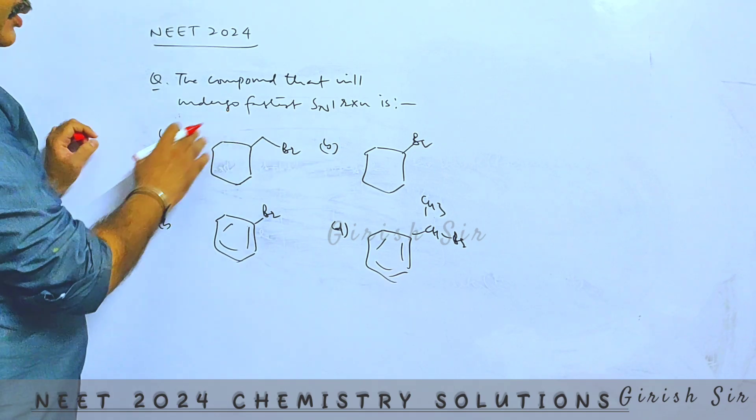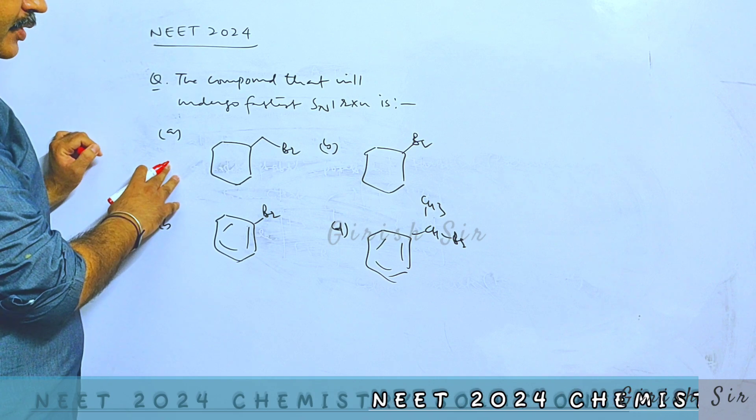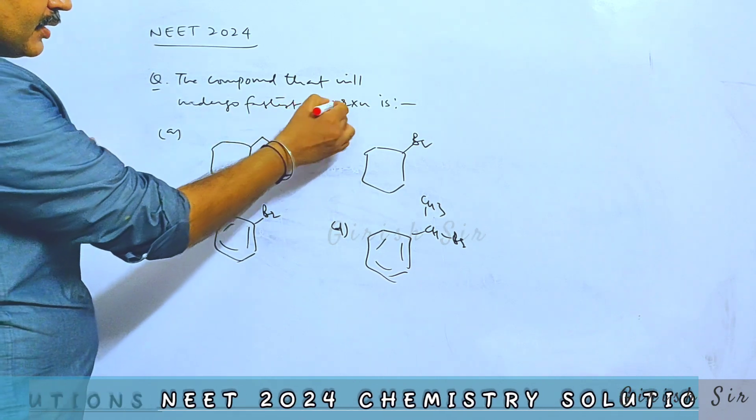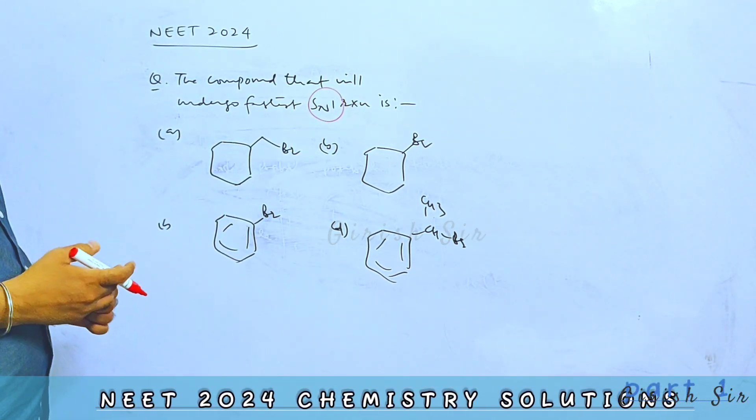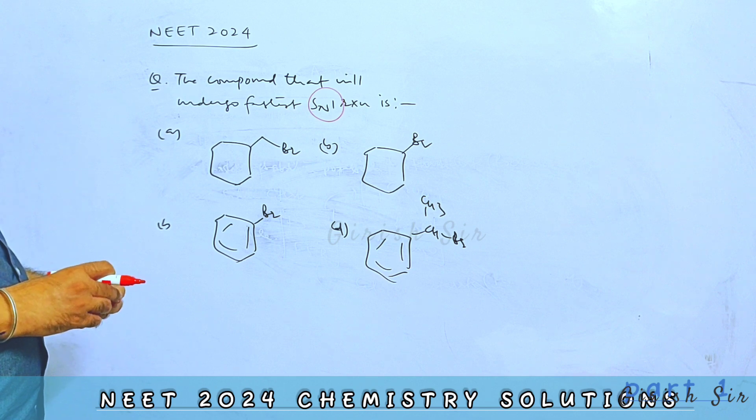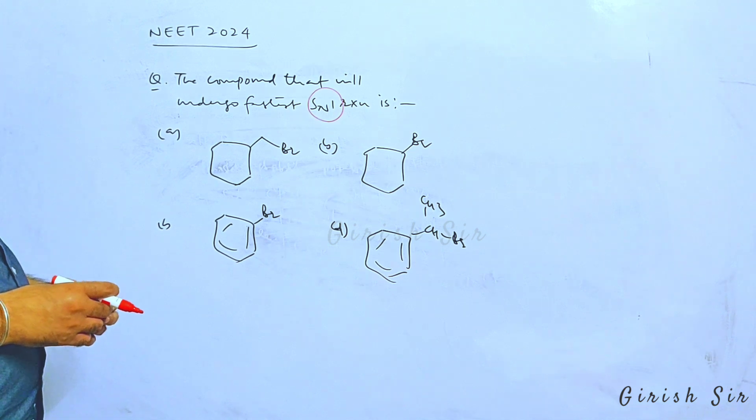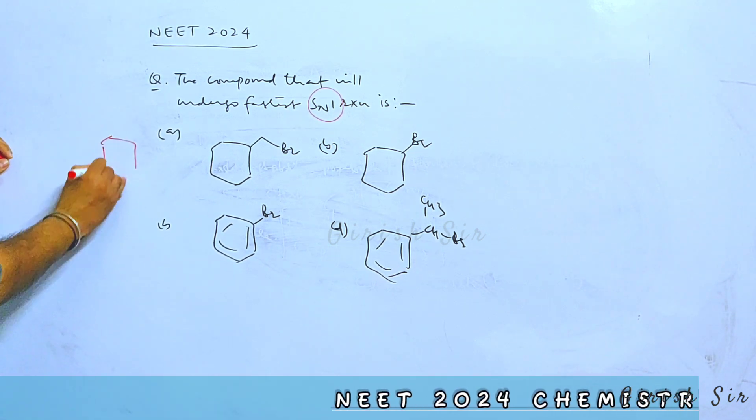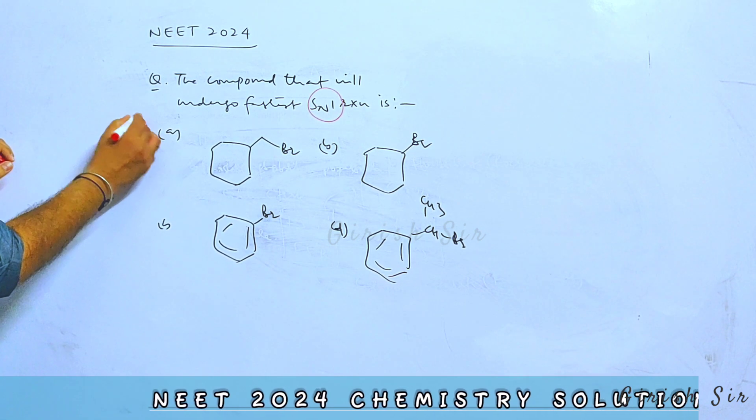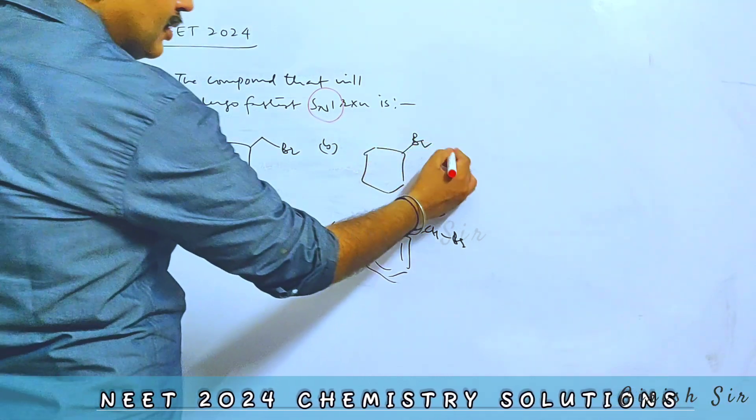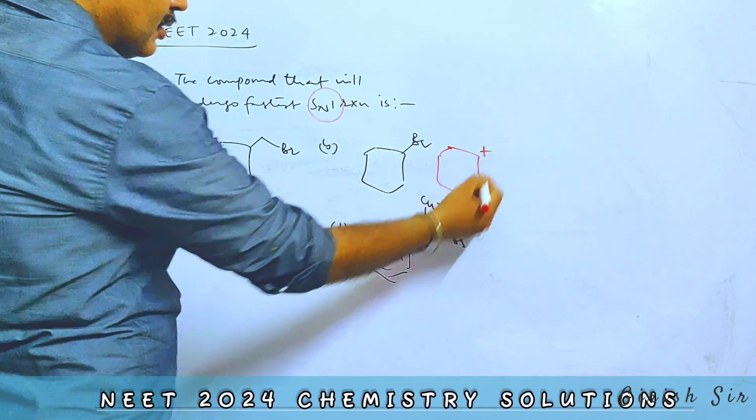Let's see the next question. The compound that will undergo fastest SN1 reaction. SN1 reaction proceeds by formation of carbocation intermediate, so rate of SN1 reaction is decided by stability of that carbocation. More stable the carbocation, faster the SN1 reaction would be. So if you look at option A, this is the carbocation it will form. Option B, this is the carbocation it will form.